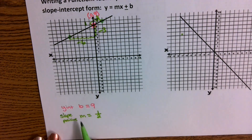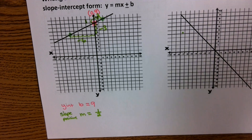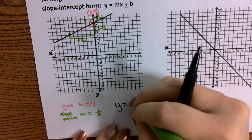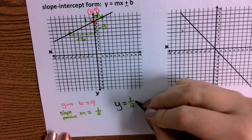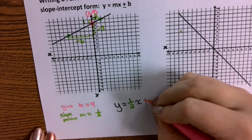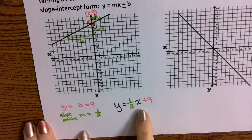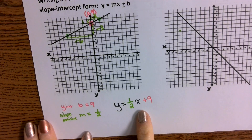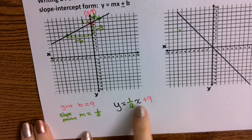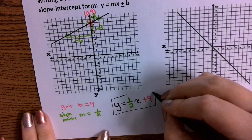So now that I know my b value and my m value, I just plug it into my equation: y = ½x + 9. Now be careful — when you're doing an IXL, if you forget to put in your variable x, you'll get it wrong. We had a student this morning who typed in the answer but forgot the variable x and got it marked wrong. Be careful: if you forget to write the x, it will be marked wrong.